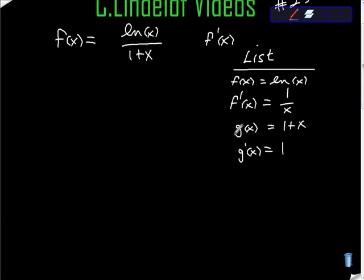So from there I'm just going to start building. And remember, we're going to take the bottom function times the derivative of the top function. So I start to sort this out, I'm going to get 1 plus x times the derivative of the top function, which is 1 over x.